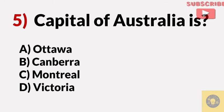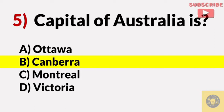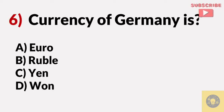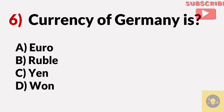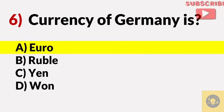The capital of Australia is — Answer B, Canberra. The currency of Germany is — Answer A, Euro.